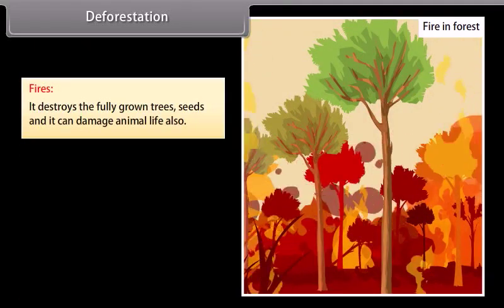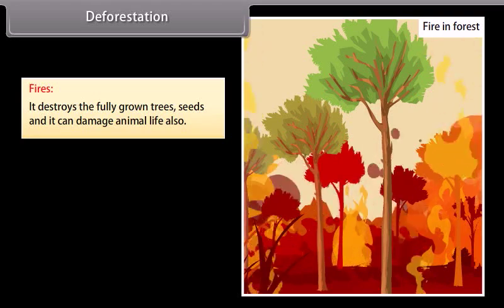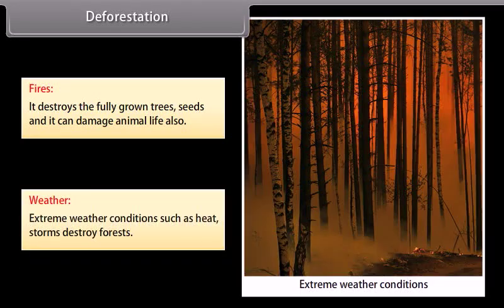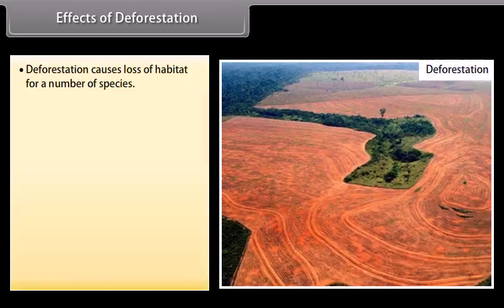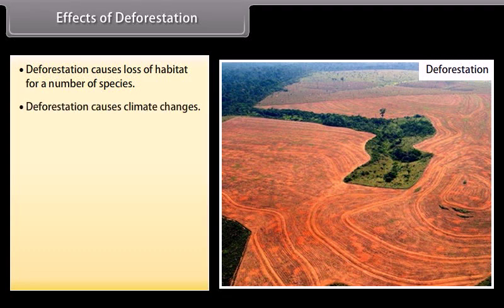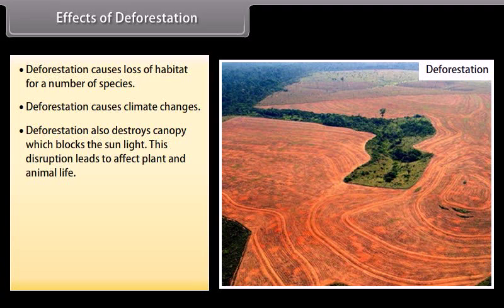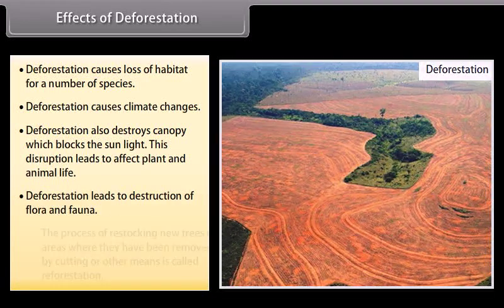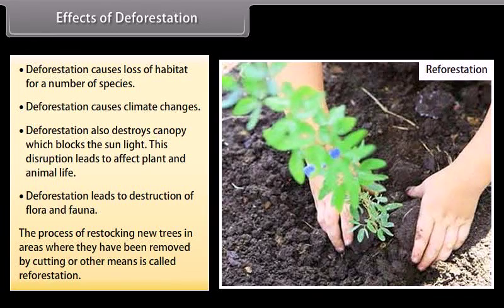Further causes of deforestation include fires, which destroy fully grown trees, seeds, and animal life; and extreme weather conditions such as heat and storms. Effects of deforestation: it causes loss of habitat for a number of species, causes climate change, destroys the canopy which blocks sunlight, disrupts plant and animal life, and leads to destruction of flora and fauna. The process of restocking new trees in areas where they have been removed is called reforestation.